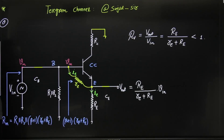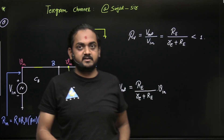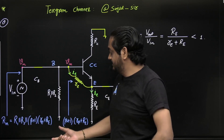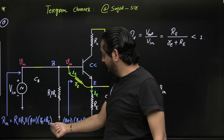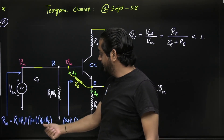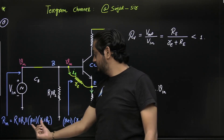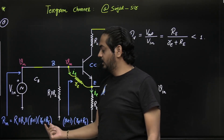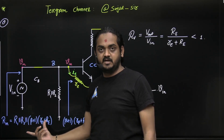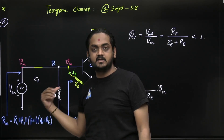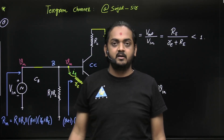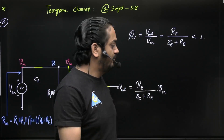This gives a large input resistance. Why? Because R1 and R2 are in kilo-ohms, and with beta around 99, the factor (beta + 1) is approximately 100 multiplied by kilo-ohms - so you get very large input impedance in the common collector configuration.